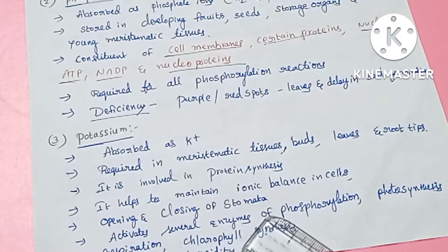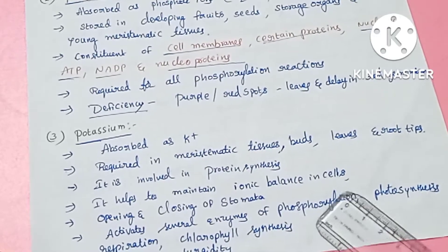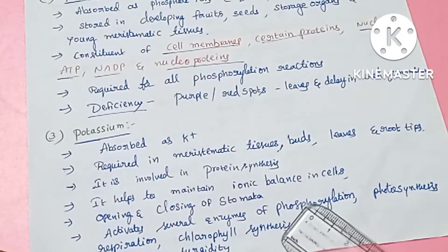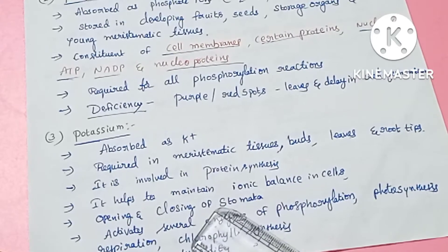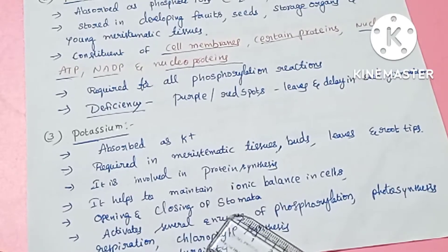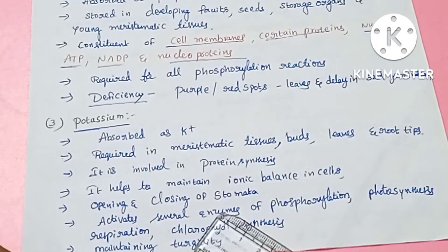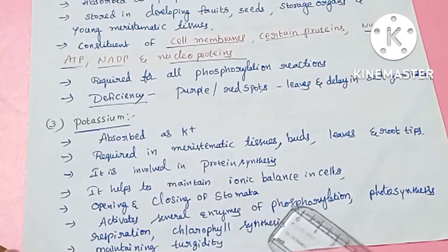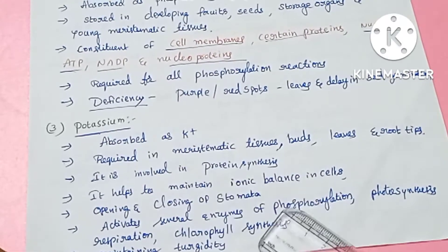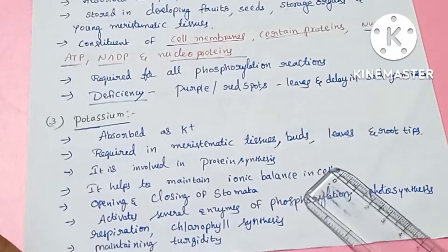Potassium acts as an activator for several enzymes involved in phosphorylation, photosynthesis, respiration, and chlorophyll synthesis. It also helps maintain turgidity in cells.